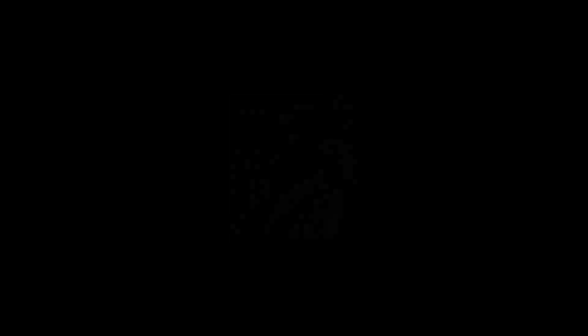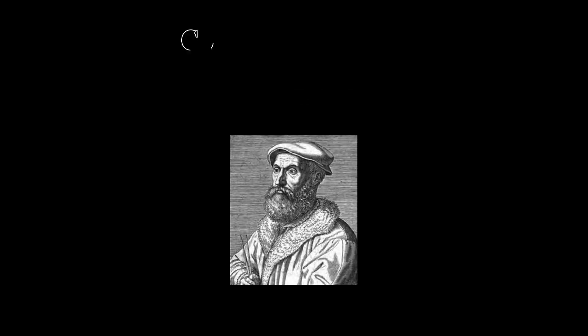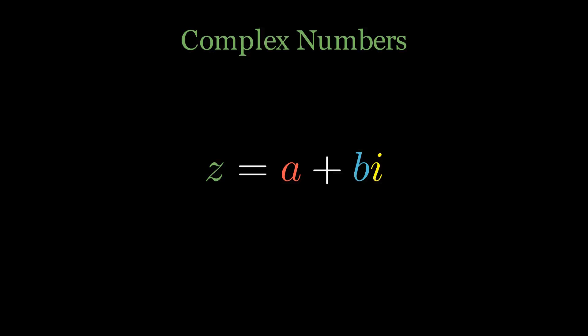However, it wasn't until 1572 when Rafael Bombelli formalized rules for what he called complex numbers. These were given the form where the root of negative one times b is the imaginary part and a is the real part.